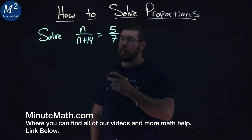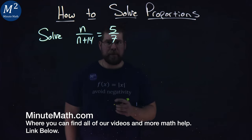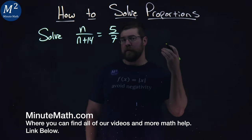We're given this problem right here: Solve n over n plus 14 equals 5 over 7.